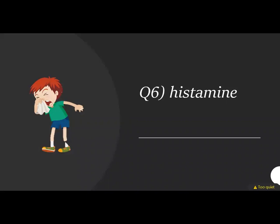Before we jump to the next section on Crohn's and UC, I have another question. We have different forms of histamines in our body — histamine 1 and histamine 2 for example. A histamine 2 receptor antagonist works well to treat what? Nighttime GERD, diarrhea, constipation, or allergy symptoms? It's a bit tricky but it's really going to help you iron out the two histamine types.